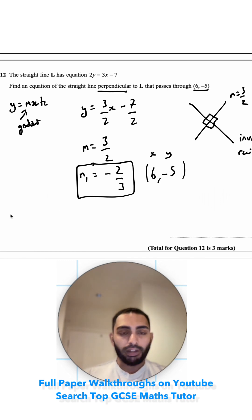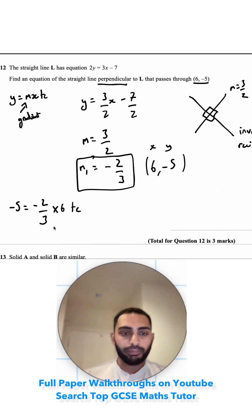So y, which is negative 5, equals m, which is negative 2 thirds, times x, which is 6, plus c, which is what we're trying to find. Simplifying: negative 5 equals negative 2 times 6 is negative 12, and negative 12 divided by 3 is negative 4 plus c.